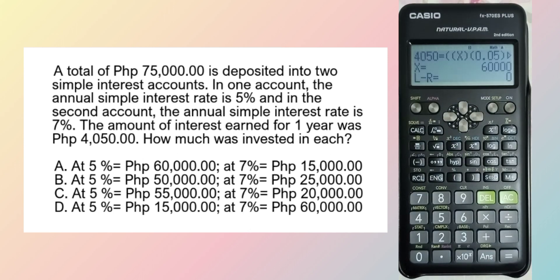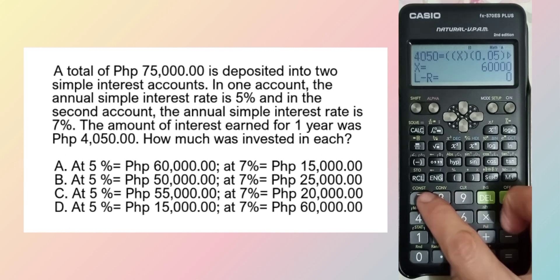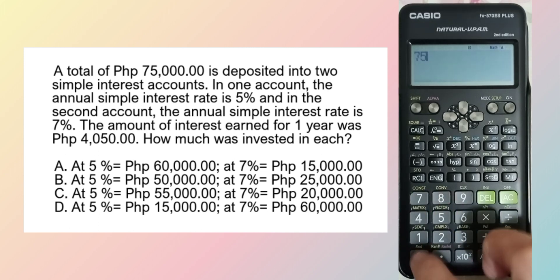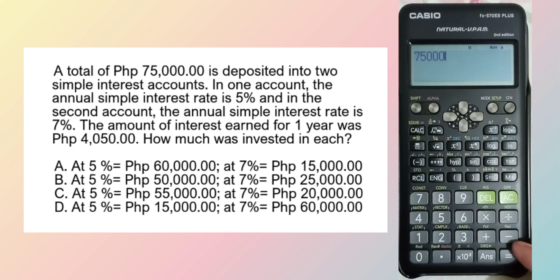60,000 was invested at 5%, and 15,000 was invested at 7%. So, it's letter A.